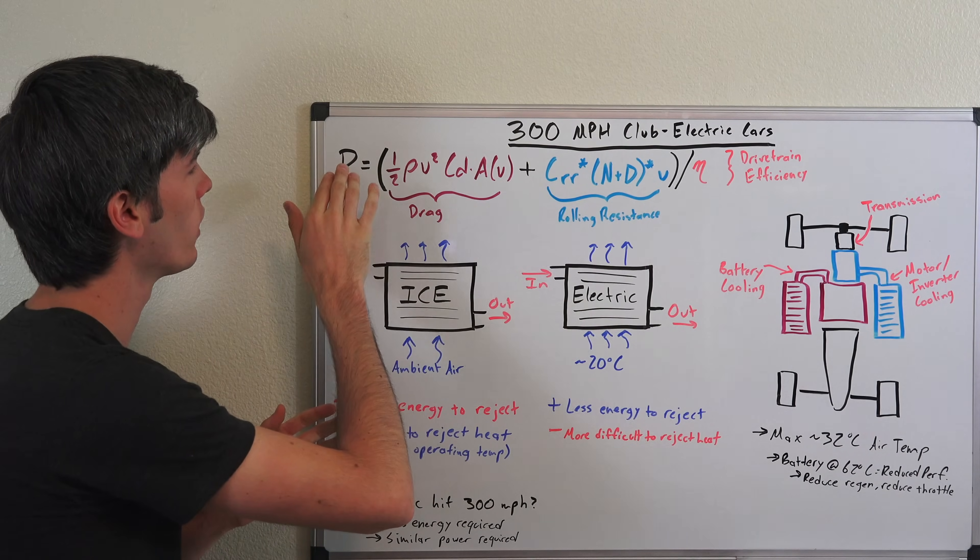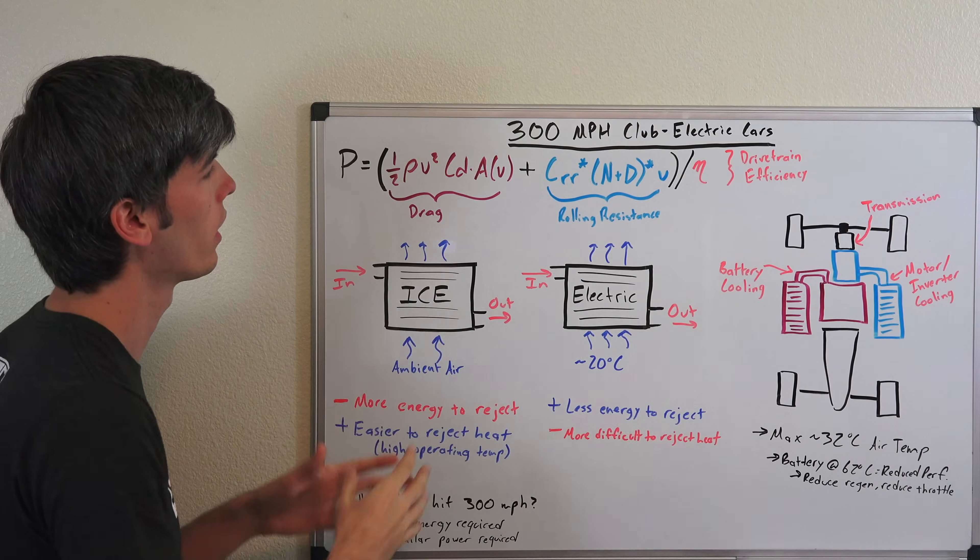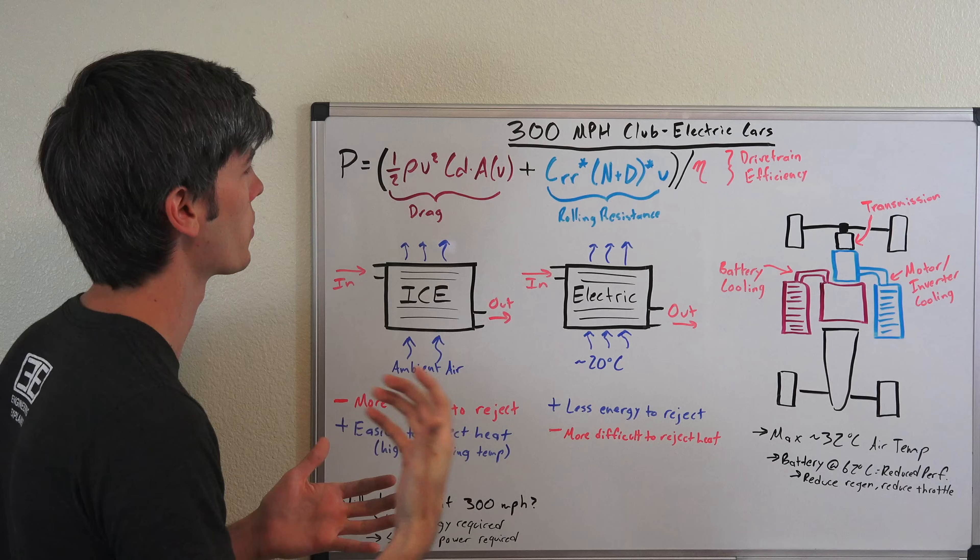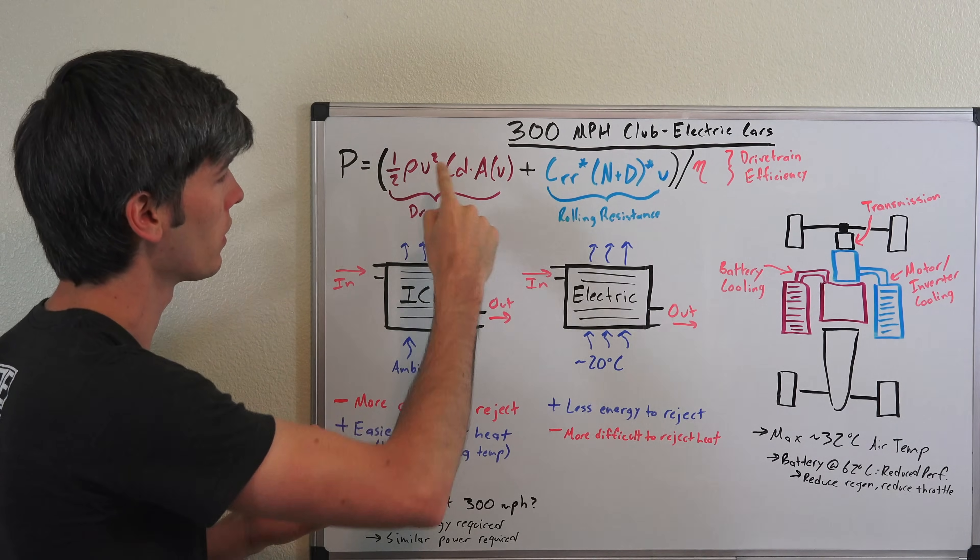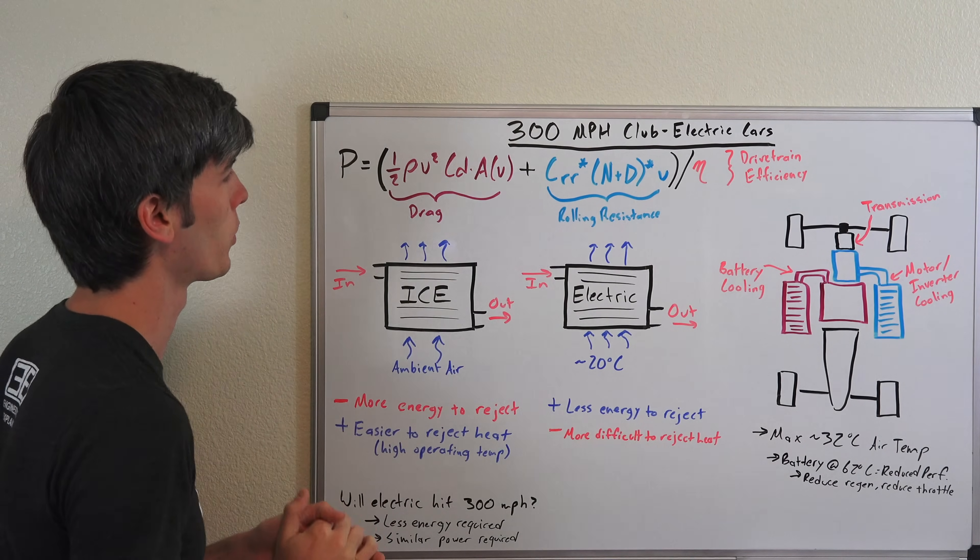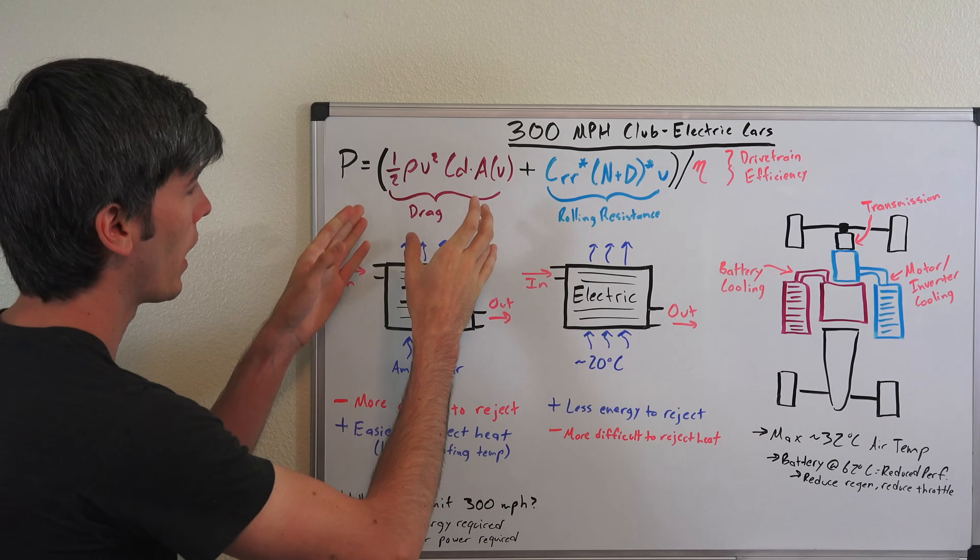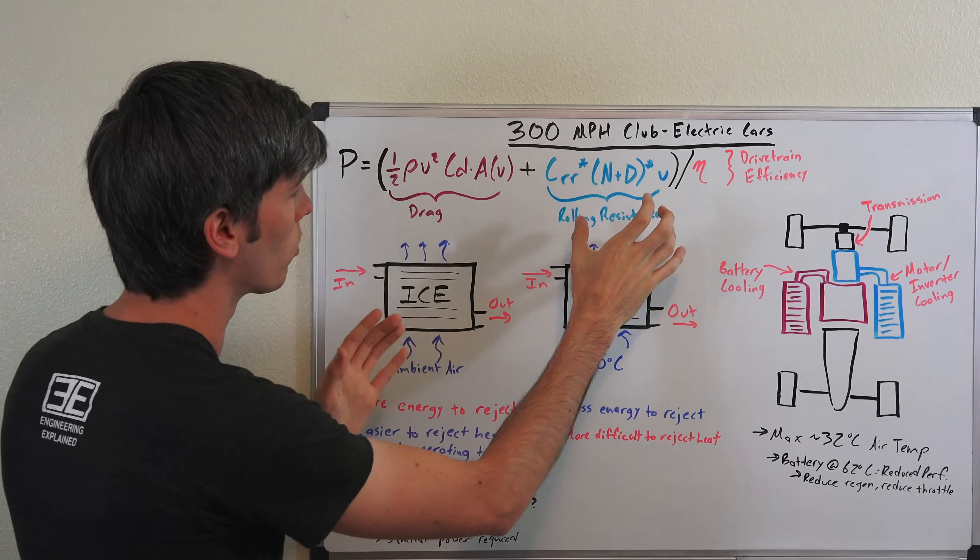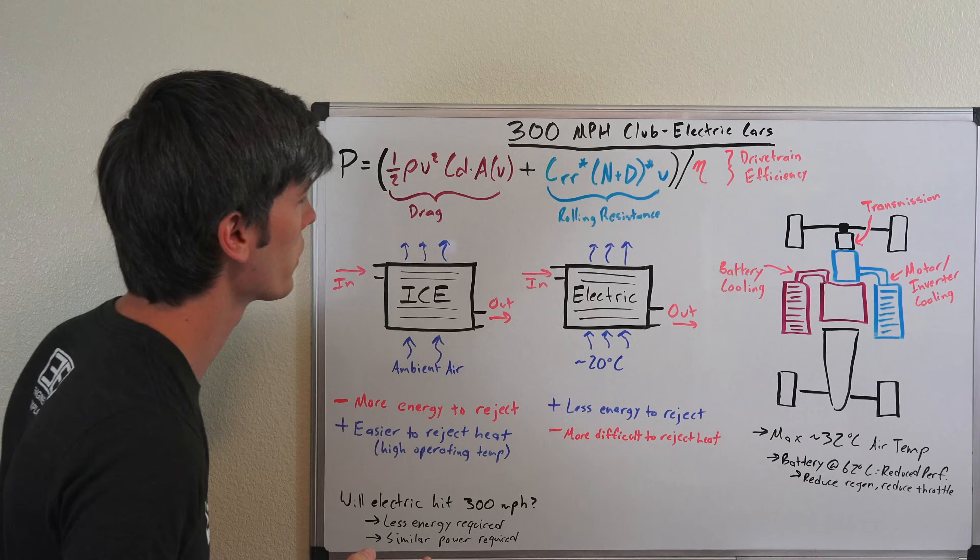Now as was discussed in the previous video this is our equation for power, how much power we will need to reach a certain speed, that speed being V for velocity here. In this case 300 miles per hour. Now you have to break this down into three different sections here. We've got drag, rolling resistance, and your drivetrain efficiency.